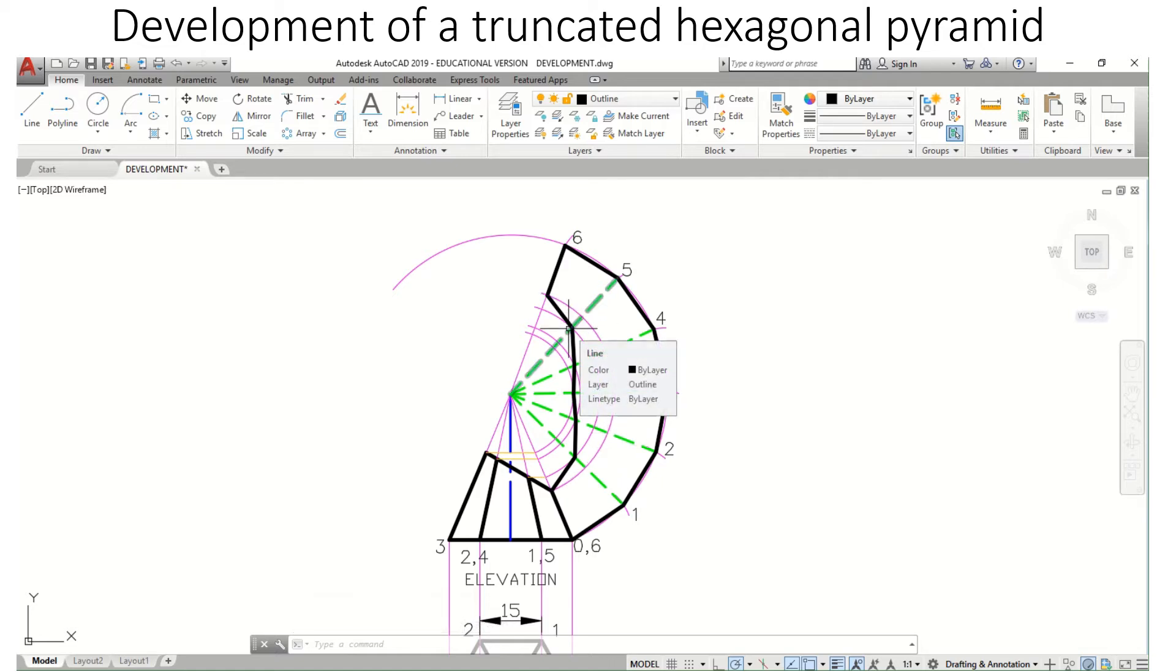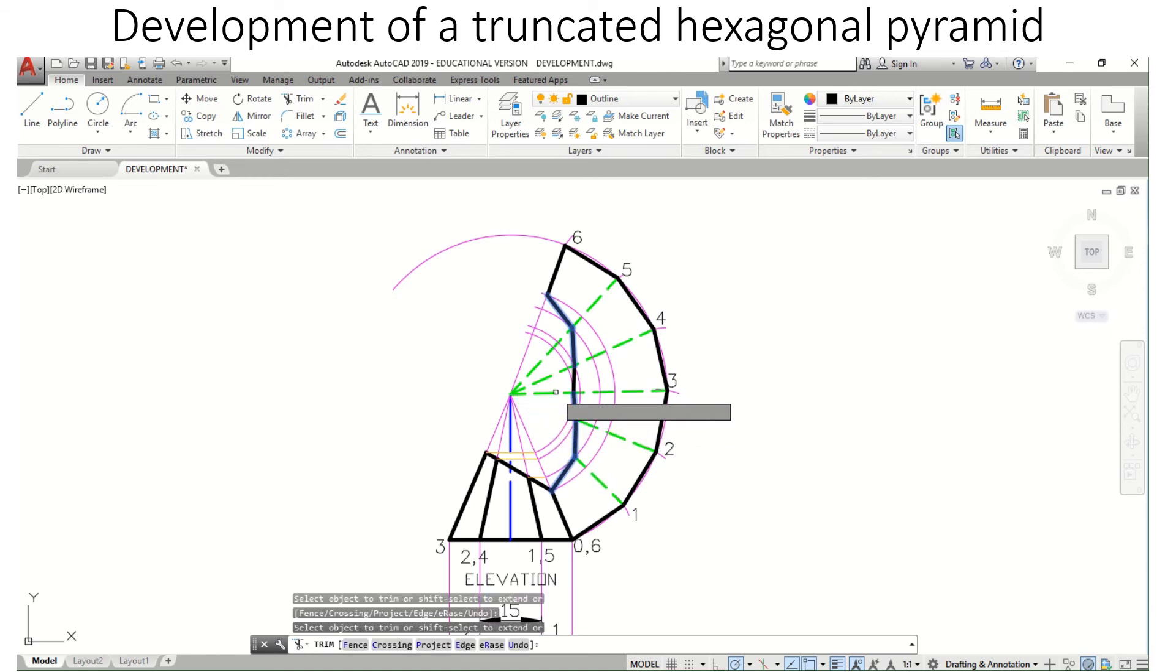Since our development has been cut, I'm just going to trim these seams here using the trim tool. There we have the development of our truncated hexagonal pyramid.